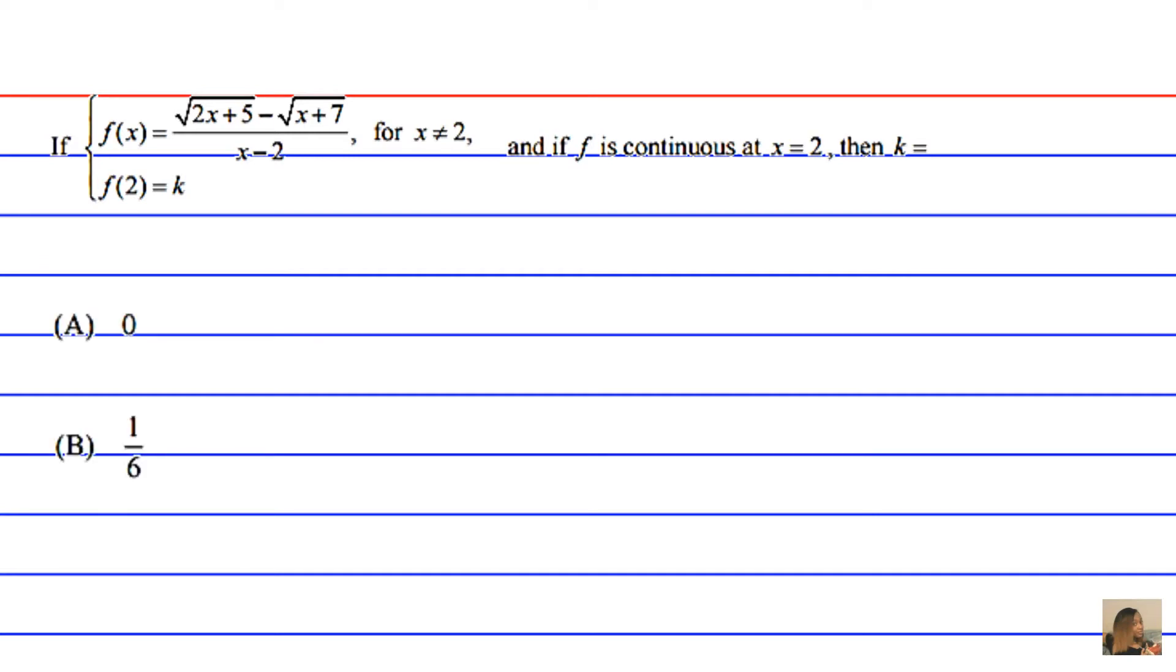(A) 0, (B) 1 over 6, (C) 1 over 3, (D) 1, or (E) 7 fifths.